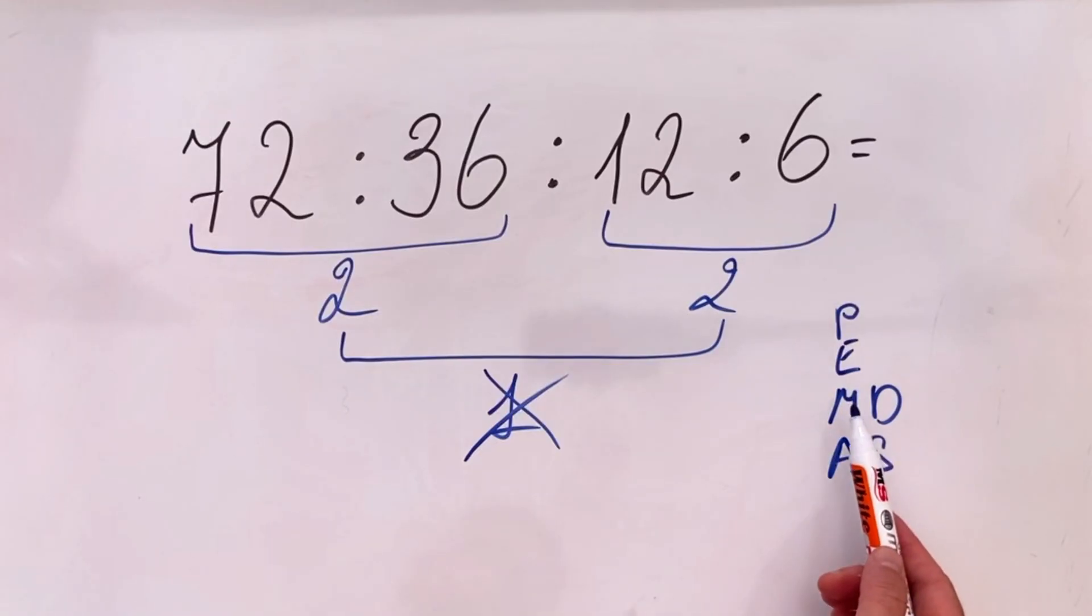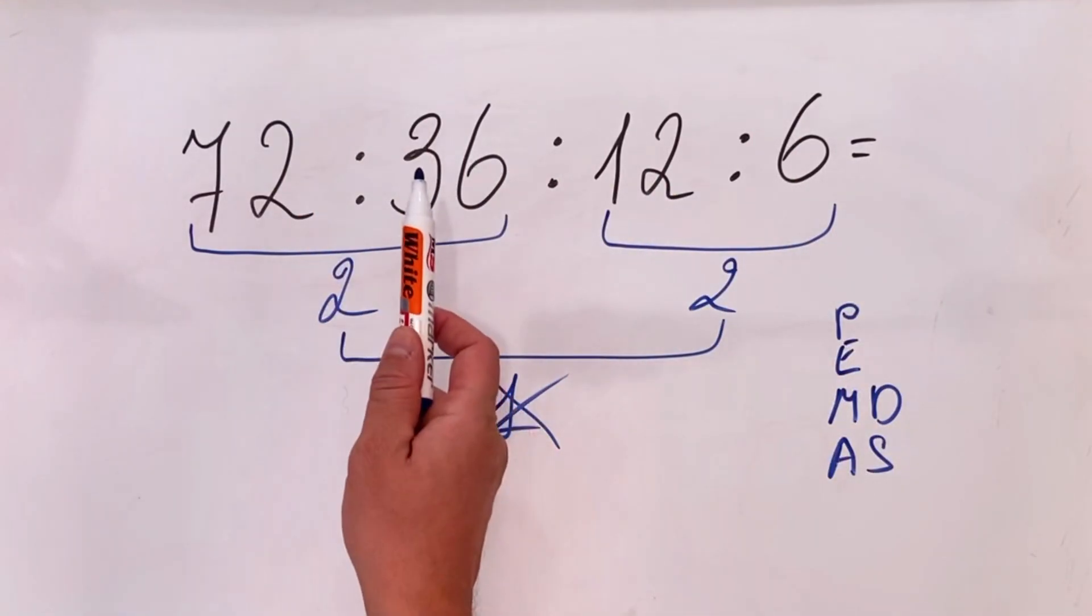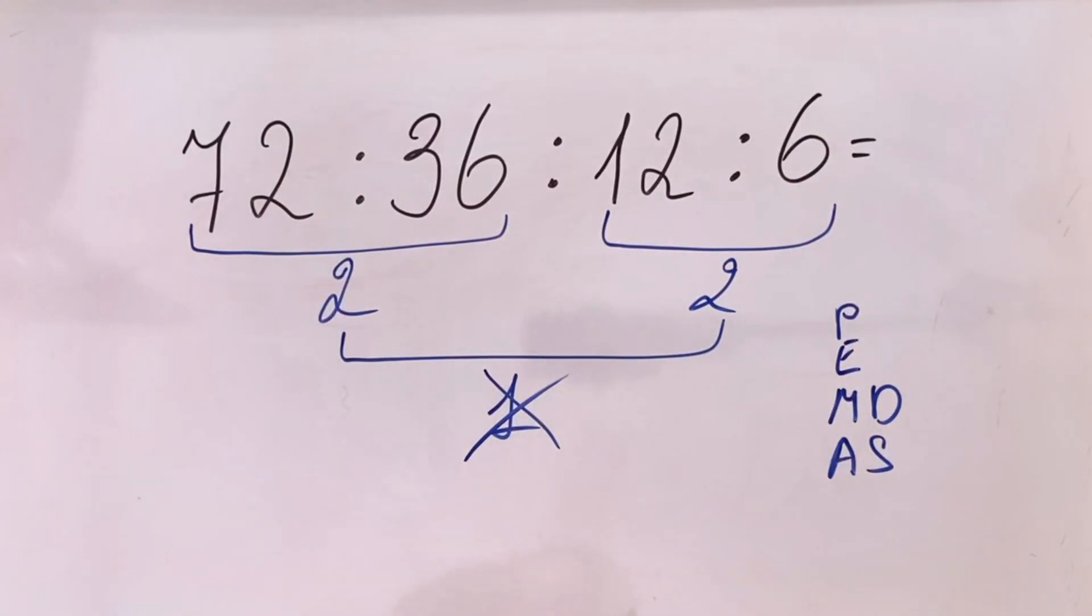When we have multiplication and division, we need to go from left to right. In our case we have only division; even in this case we need to go from left to right. So the correct way would be...